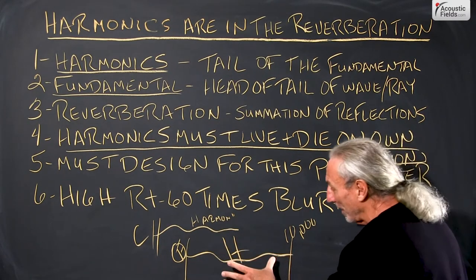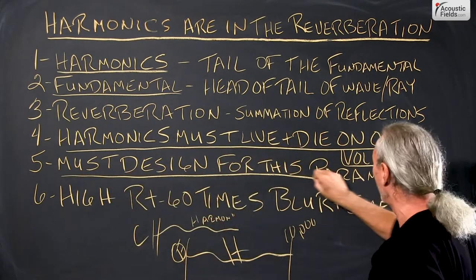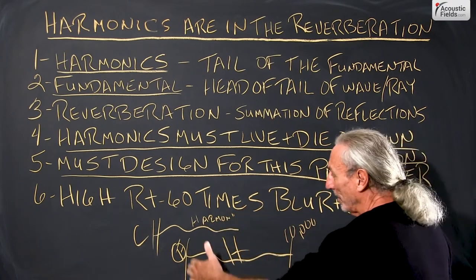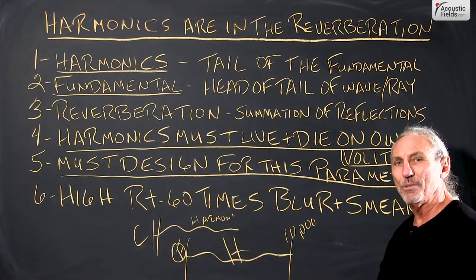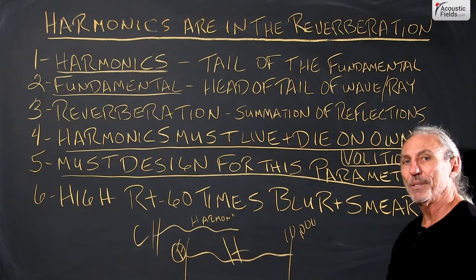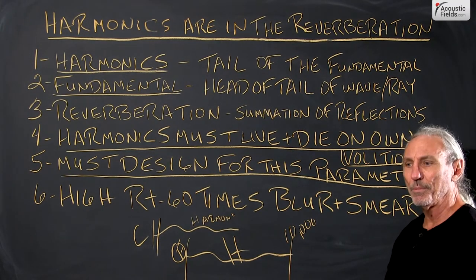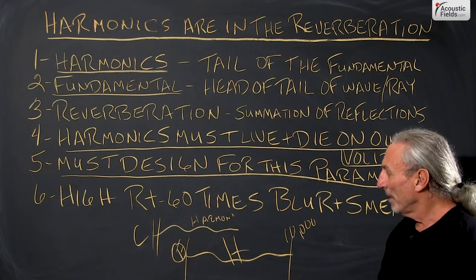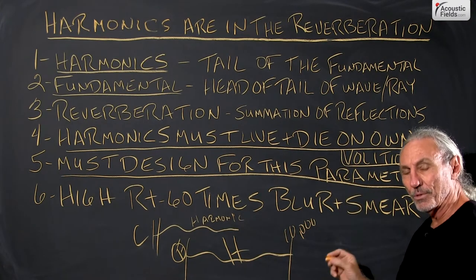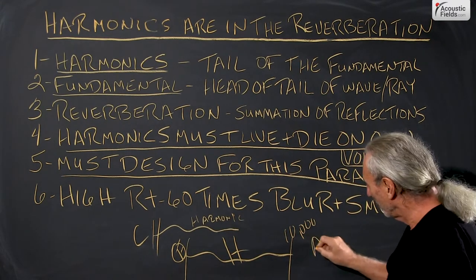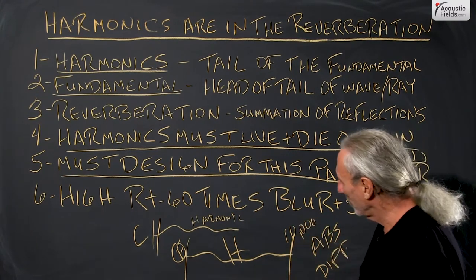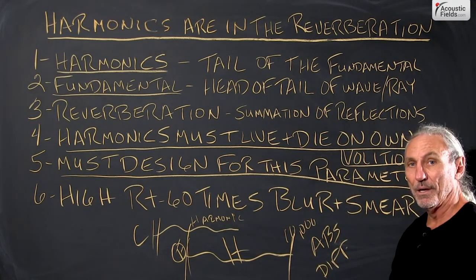The bottom line here is that we as designers must design for this parameter. We must design for this harmonic to really come to life, because that's where music is, that's where the emotion is, that's where the feeling is. If we just had a room that covered the fundamentals, it would be too dead — that's when people say it's got no life because it's got no harmonic structure in the room. You have to realize when designing rooms that you use your absorption and diffusion treatment to make sure you get out of the way of that tail of the fundamental.